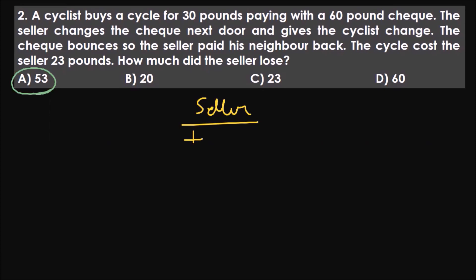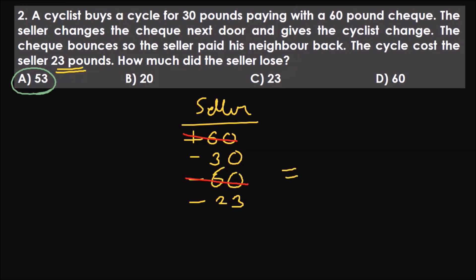The seller first receives a 60 pound check — so plus 60. From that, he gives 30 pounds back to the cyclist as balance — so minus 30. Then the check bounces, so he has to give the entire 60 pounds back to the neighbor — minus 60. On top of that, the cycle cost him 23 pounds — minus 23. Plus 60 and minus 60 cancel out. So ultimately the answer is minus 30 minus 23, which equals minus 53: a total loss of 53 pounds.